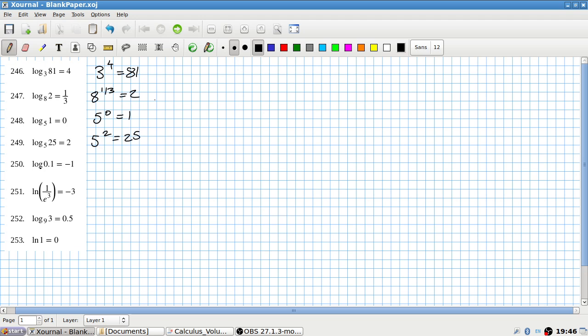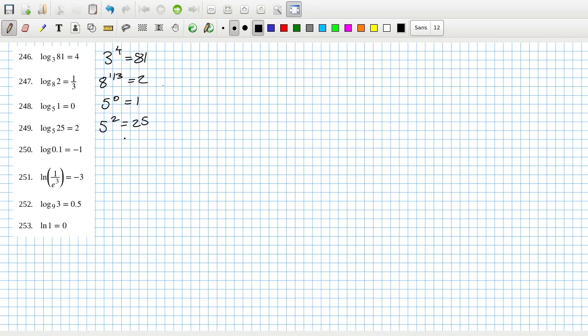Now most of the time when you don't state the base it means base e, but it could also mean base 10 and base 2 depending on the subject. Here this book is using log with no base to mean 10 and ln to mean e. So this is 10 power minus 1 equals 0.1. This one here is base e, so this is saying e power minus 3 equals 1 over e cubed. This one here is 9 power 0.5 equals 3, and this one is e power 0 equals 1.